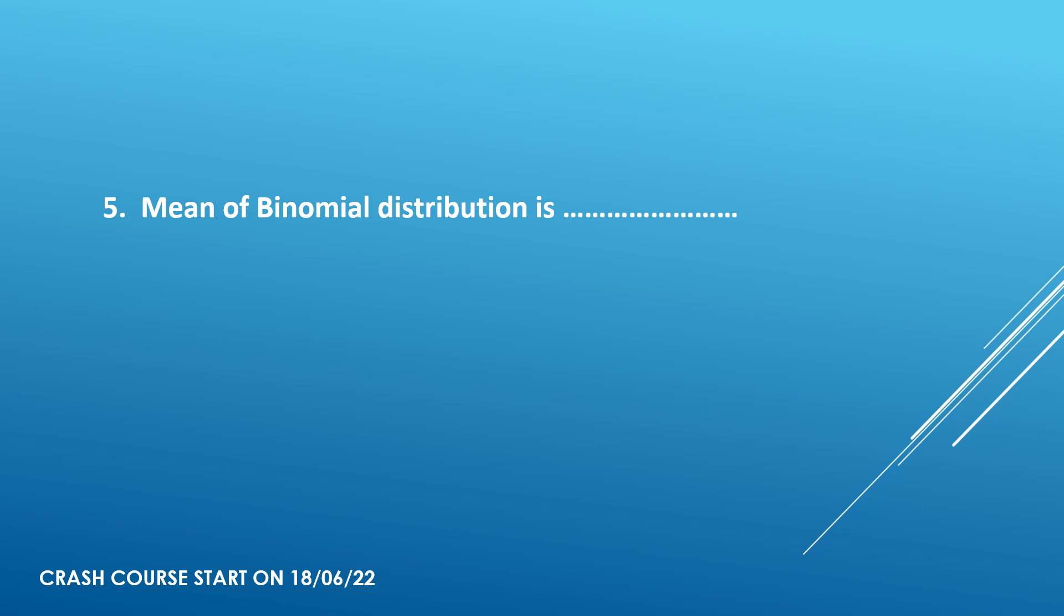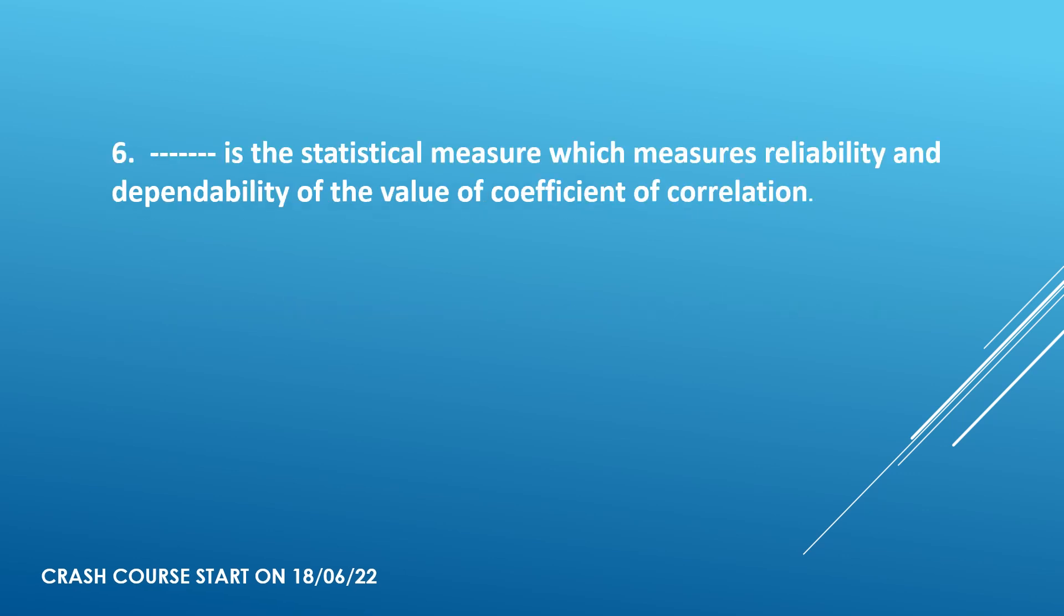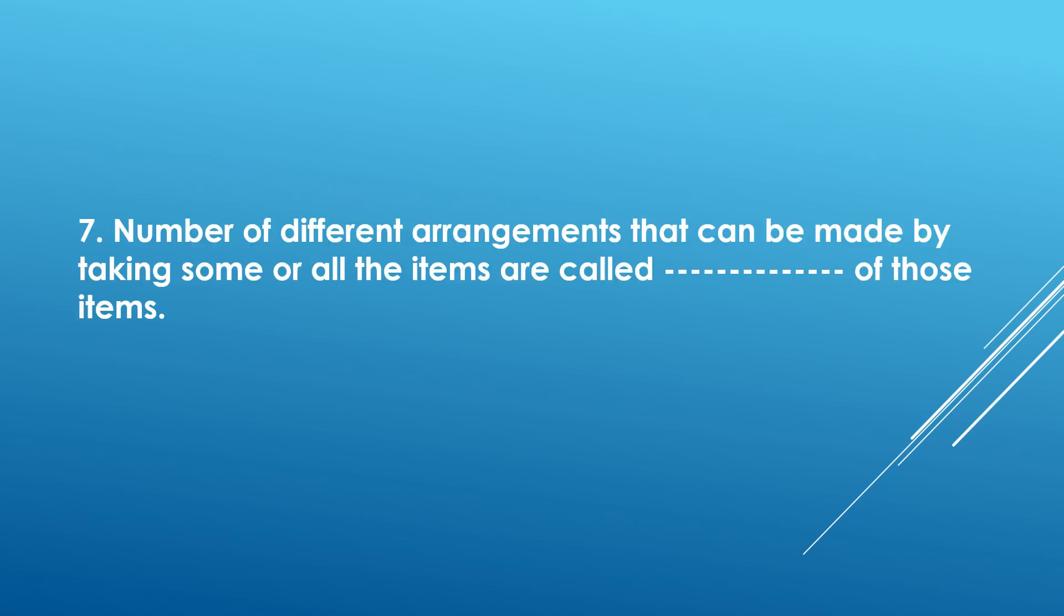Question 5: Mean of binomial distribution. The answer is NP, where N denotes the number of trials and P denotes the probability for success in a single trial. Sixth question: Dash is the statistical measure which measures reliability and dependability of the value of coefficient of correlation. Answer: probable error. Seventh question: Number of different arrangements that can be made by taking some or all the items are called dash of those items. Answer: permutation.